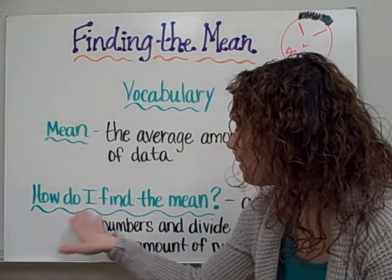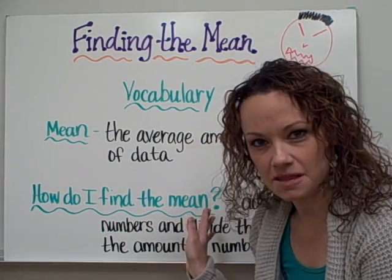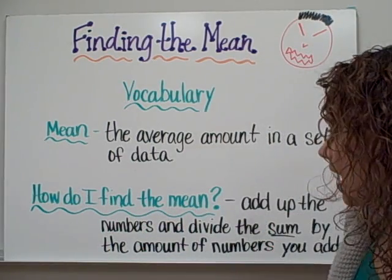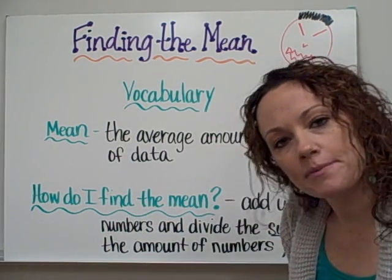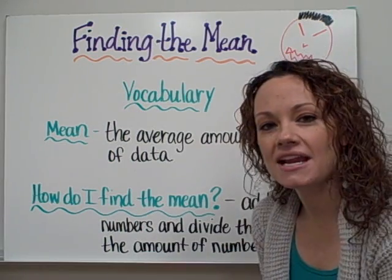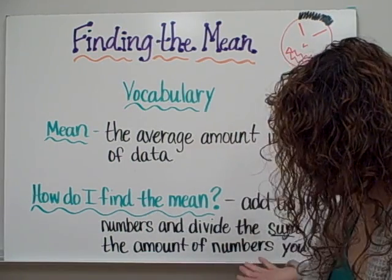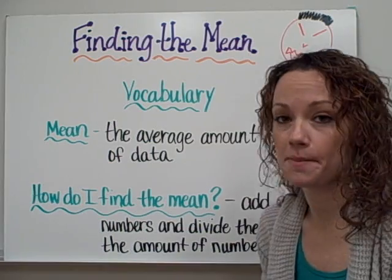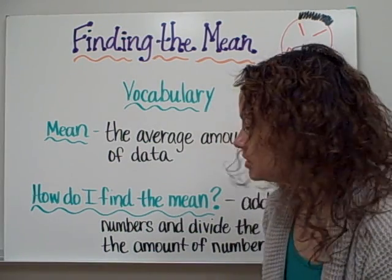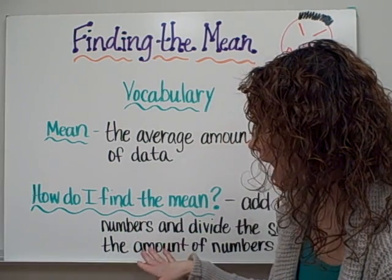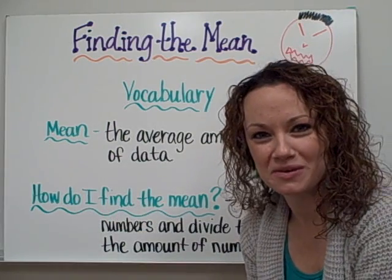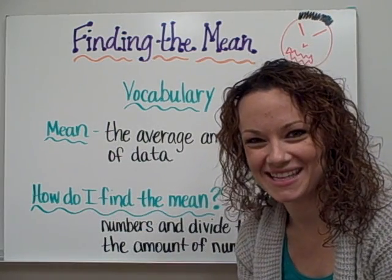Now we're going to learn how to find the mean. What you need to do is add up all the numbers that are given to you, and then divide that sum by the actual amount of numbers that you added up. Please write those steps for finding the mean in box number 2 of your homework sheet as well.